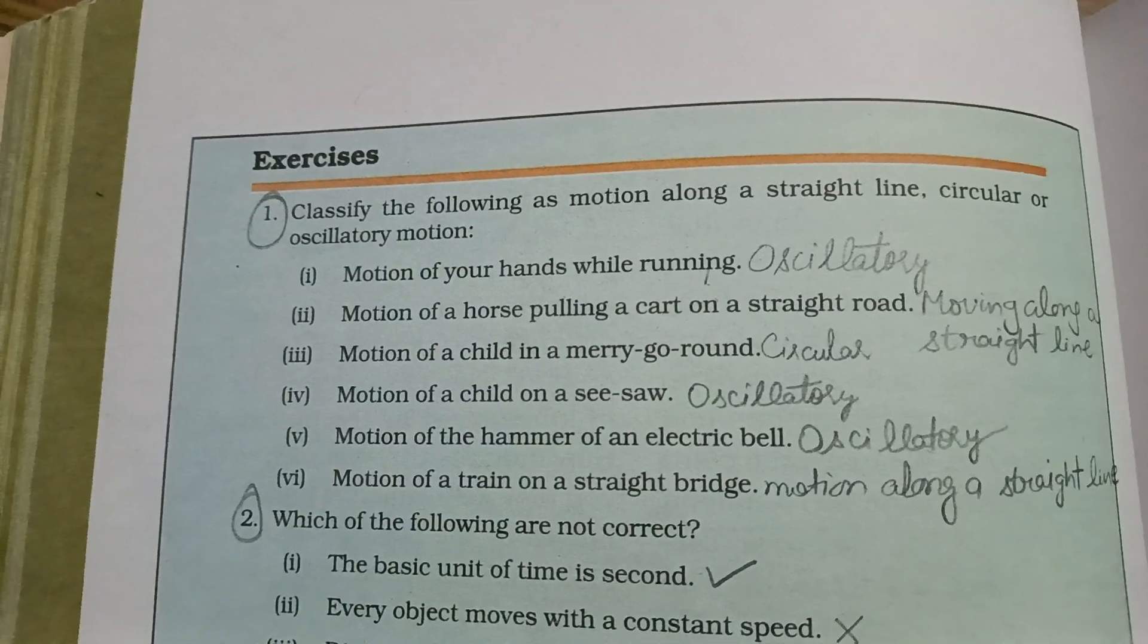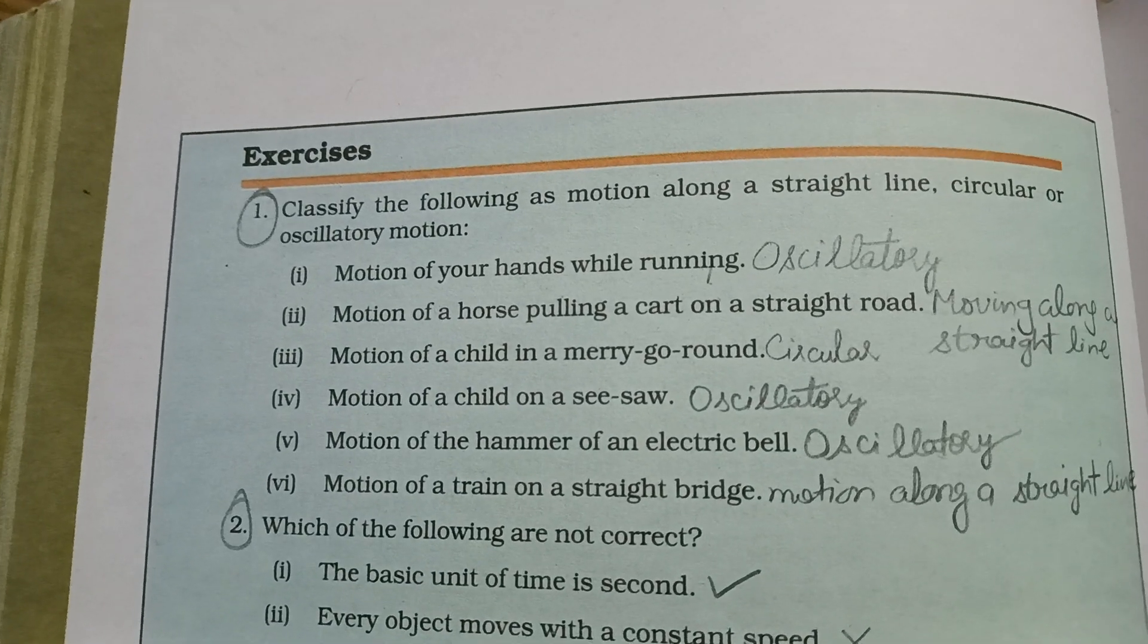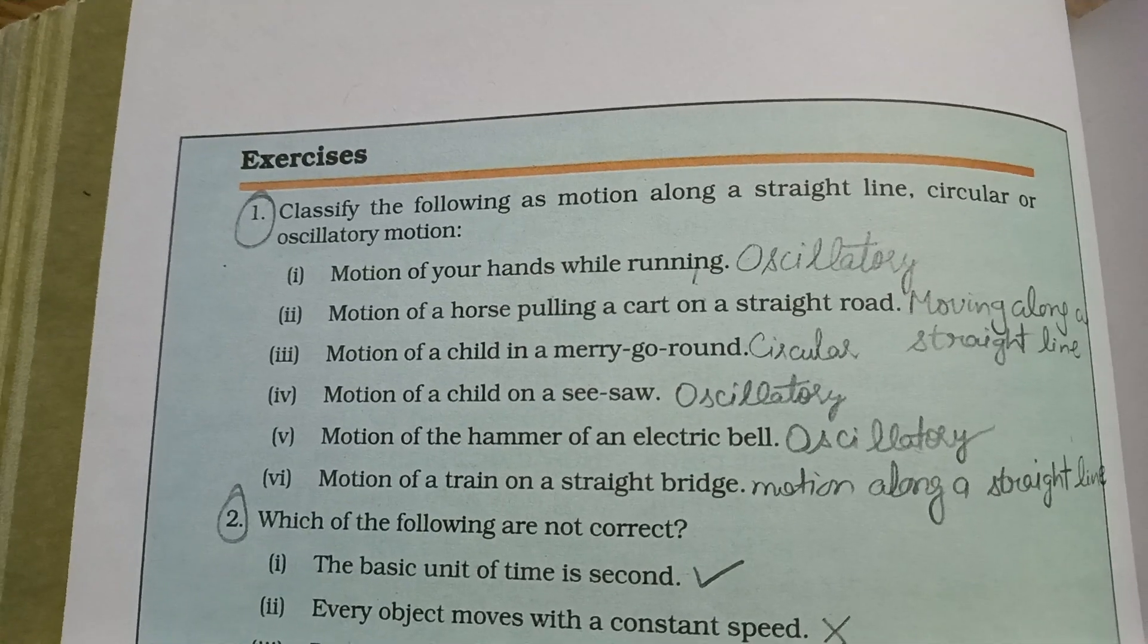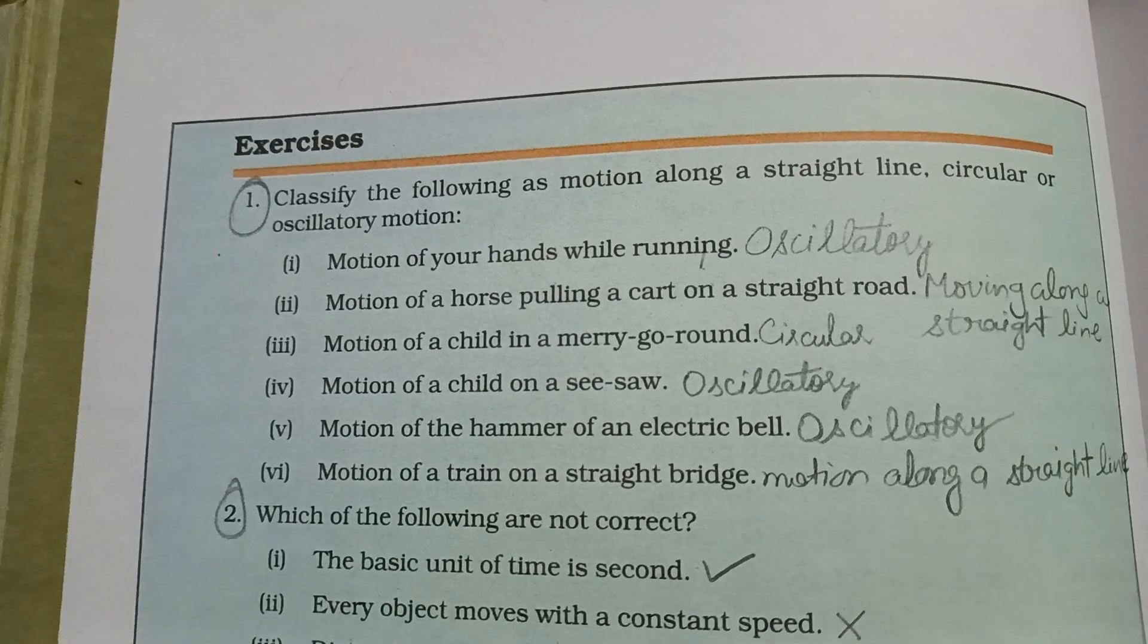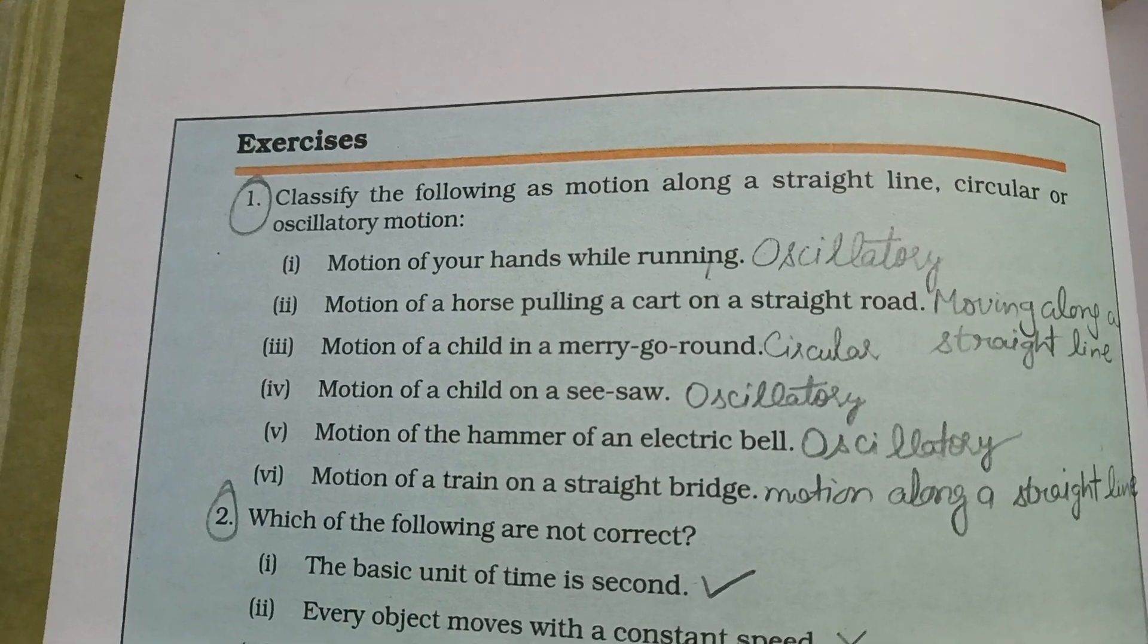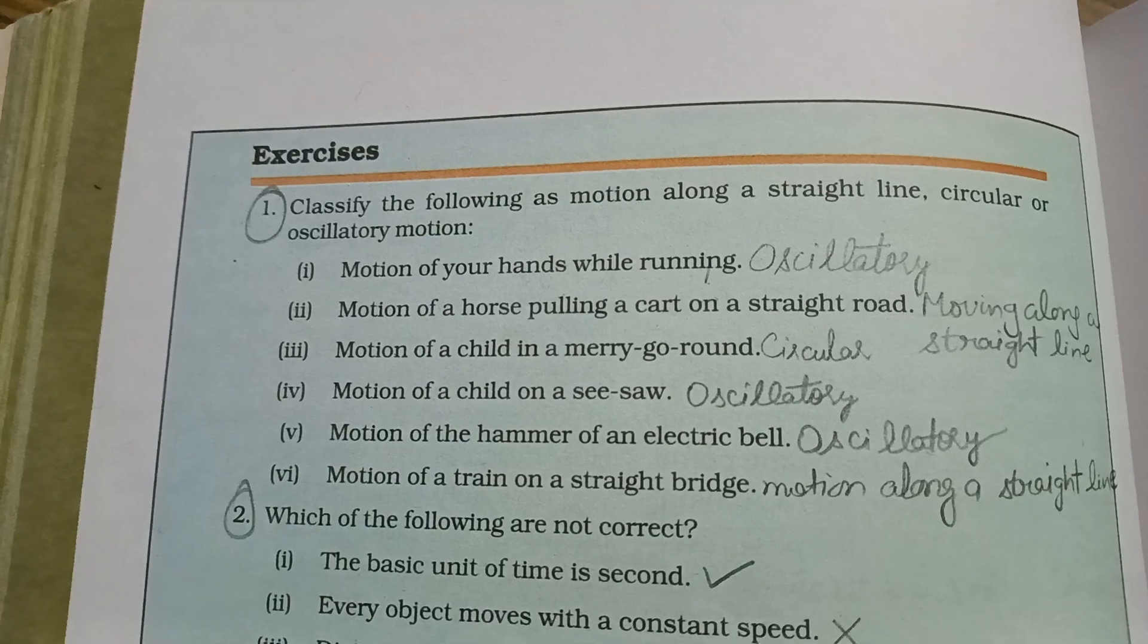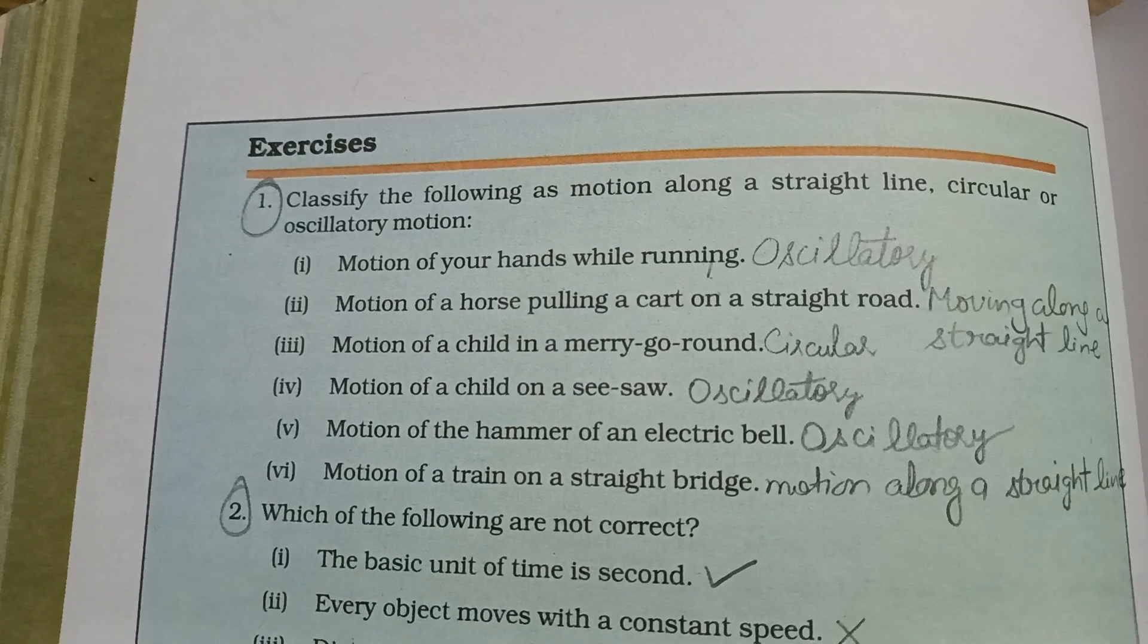To first one - motion of your hand while running. Jab aap bhaag rahe hain to humare jo hand ki movement hai wo kya hogi - oscillatory, matlab to and fro, aage piche move kar rahe hain. Motion of a horse pulling a cart on a straight road - straight road par agar horse ko pull kiya ja raha hai, to wo kaun sa motion hoga - moving along a straight line. Motion of a child in a merry-go-round - merry-go-round mein ghoom raha hai to kaun sa motion hoga - circular motion.